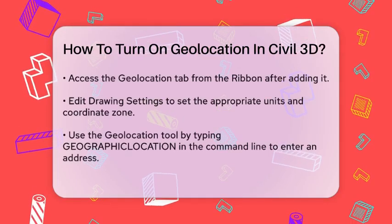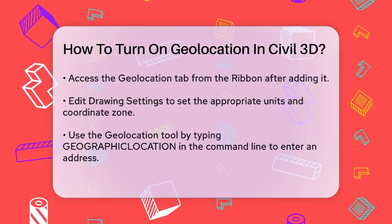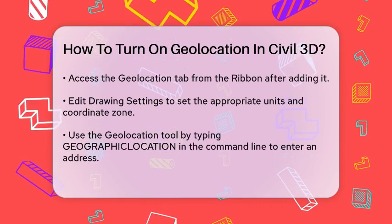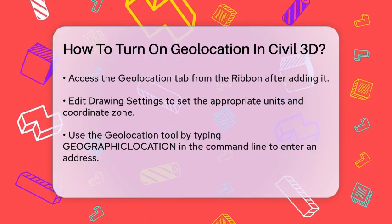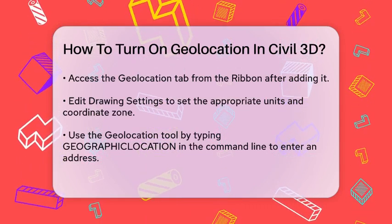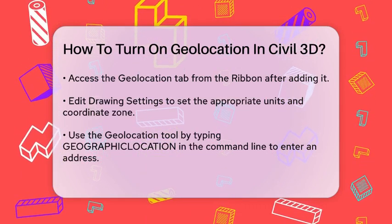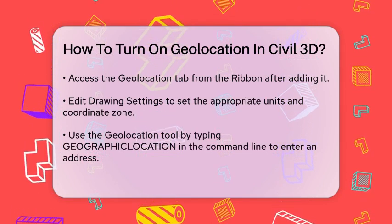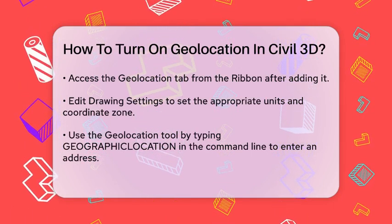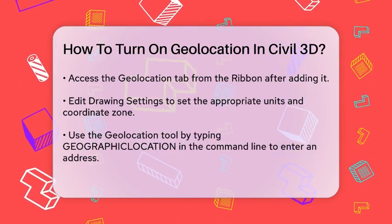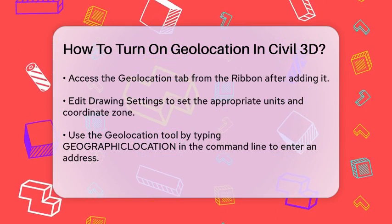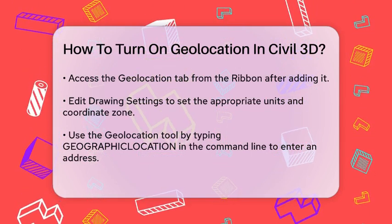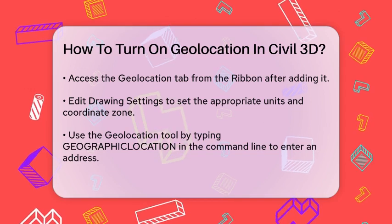Next, you need to set up your drawing settings to work with Geolocation. Go to Edit Drawing Settings and set your units and zone. For example, if you're working in Illinois, you would select the US Illinois State Plain NAD 83 East Zone US Foot coordinate system.